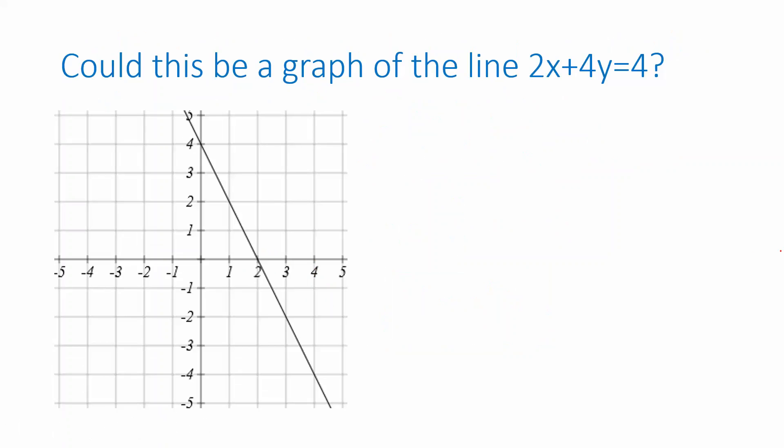Let's do one more, slightly different. This time, we're given an equation and we're asked whether this graph corresponds to that equation for a line. Could this graph be for the line 2x plus 4y equals 4? Well, in this case, probably the easiest thing to do to decide if this could be the right graph is to check whether it has the correct intercepts. So what would the intercepts be for this line and do they match the actual intercepts we see?